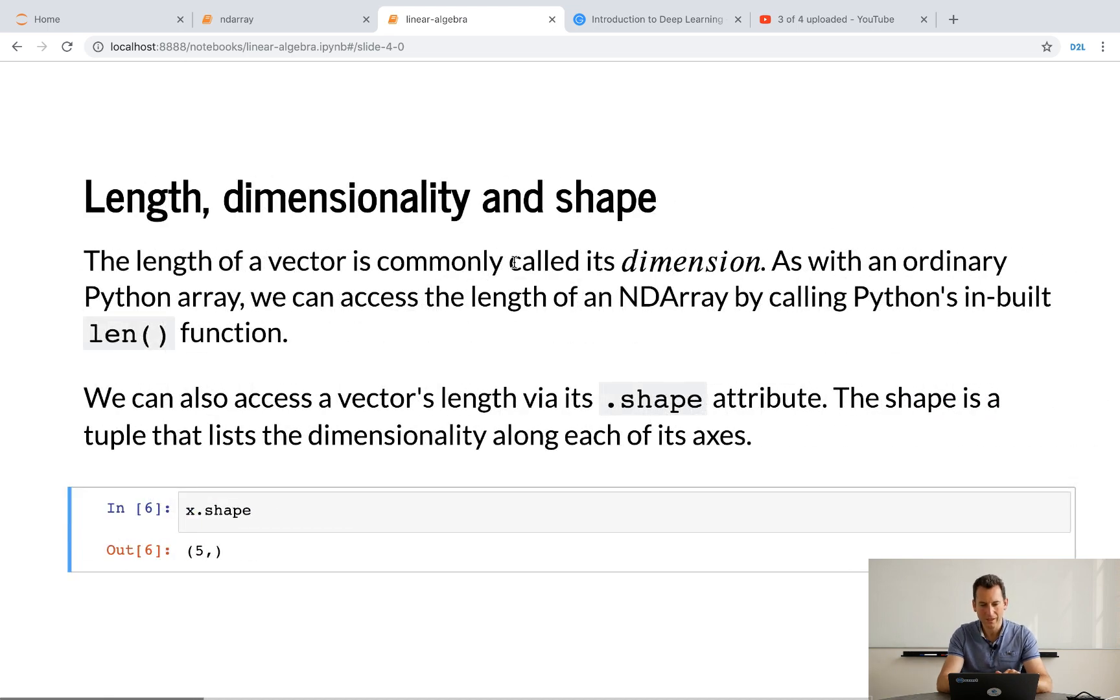Now, one important thing is that you may want to look at the dimensionality and the shape of a vector. So, the shape of a vector, for instance, you could have like a matrix, maybe a two by three matrix. And then the shape of that matrix would be two and three. But the length is just a number of non-zero entries.